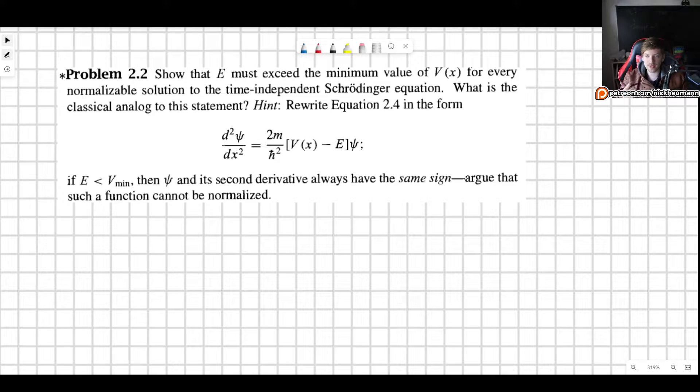Now this problem states the following: show that the energy must exceed the minimum value of the potential for every normalizable solution to the time-independent Schrödinger equation. What is the classical analog to this statement?